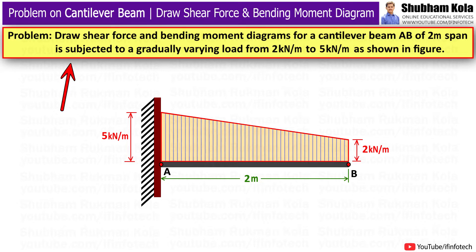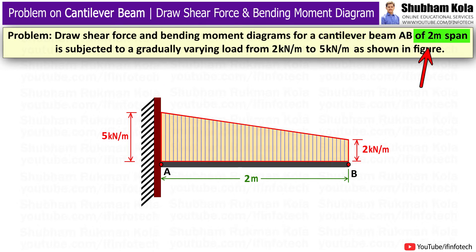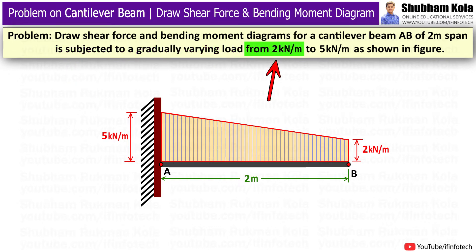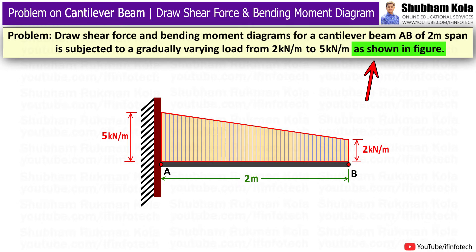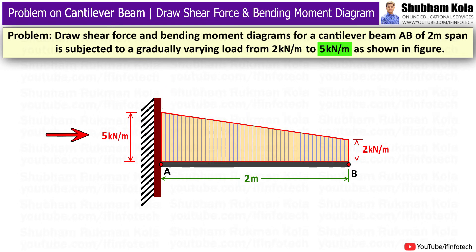The problem statement is: Draw a shear force diagram and bending moment diagram for a cantilever beam AB of 2m span subjected to gradually varying load from 2kN per meter to 5kN per meter as shown in the figure. This is the cantilever beam AB of length 2m which carries gradually varying load of 2kN per meter at the free end, increasing gradually up to 5kN per meter at the fixed end.